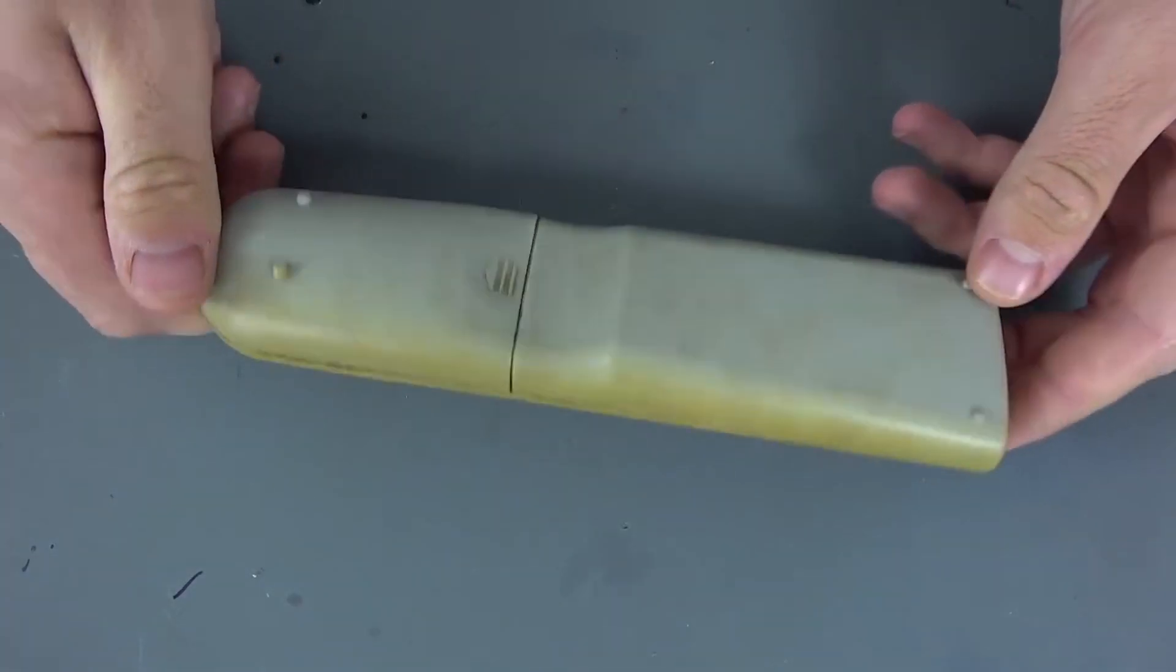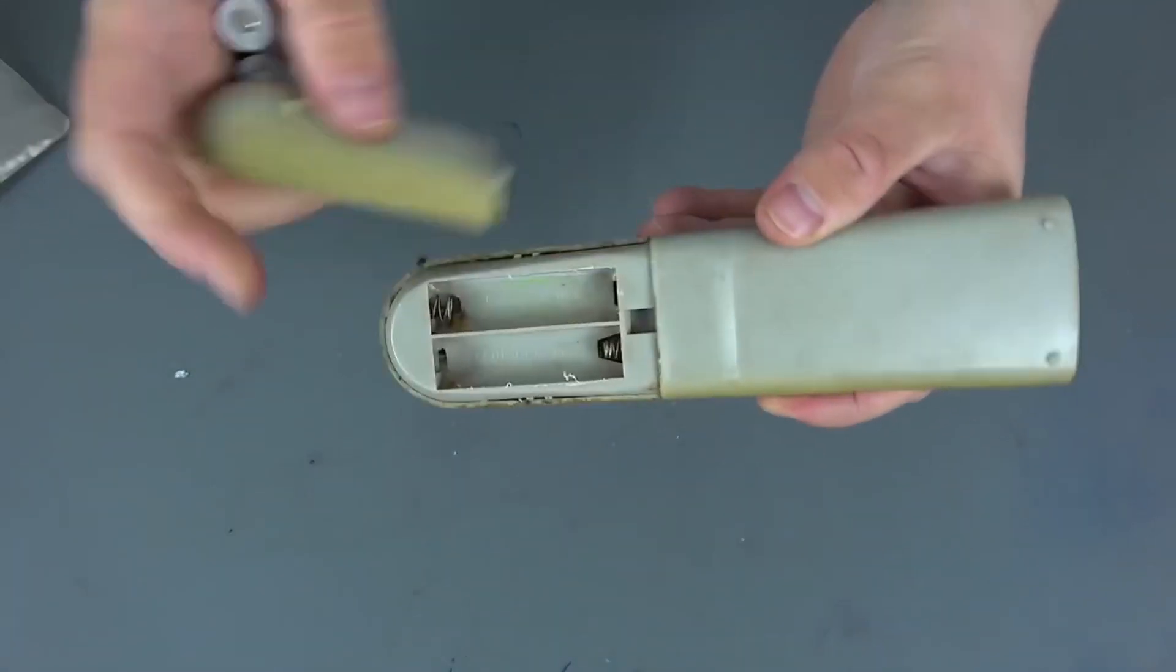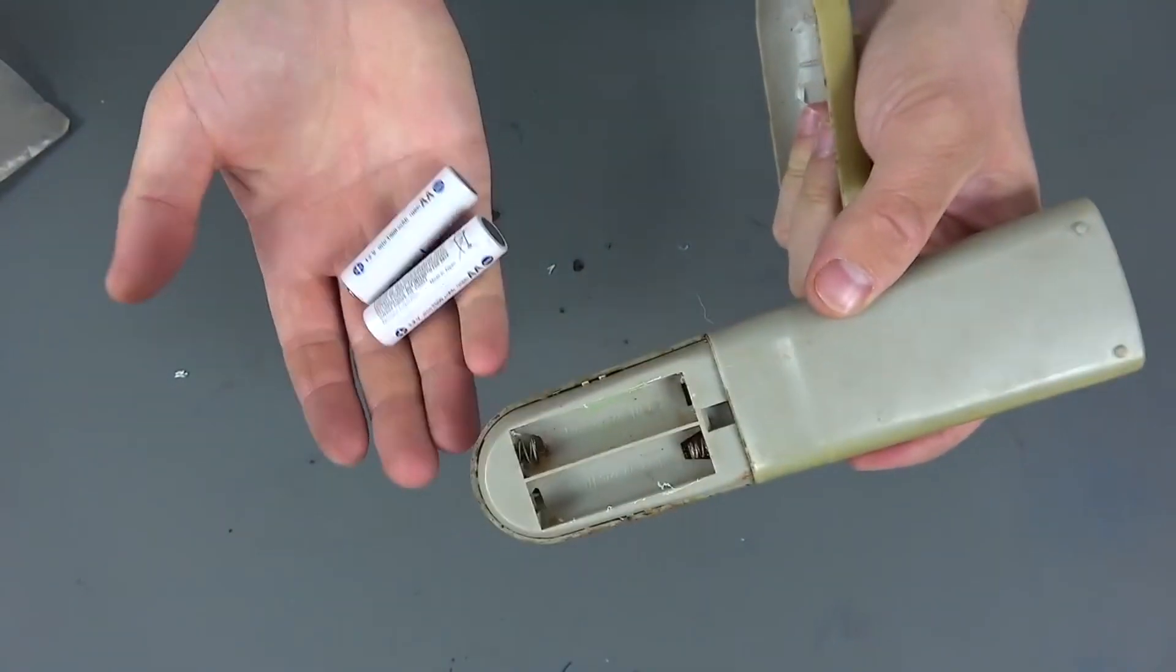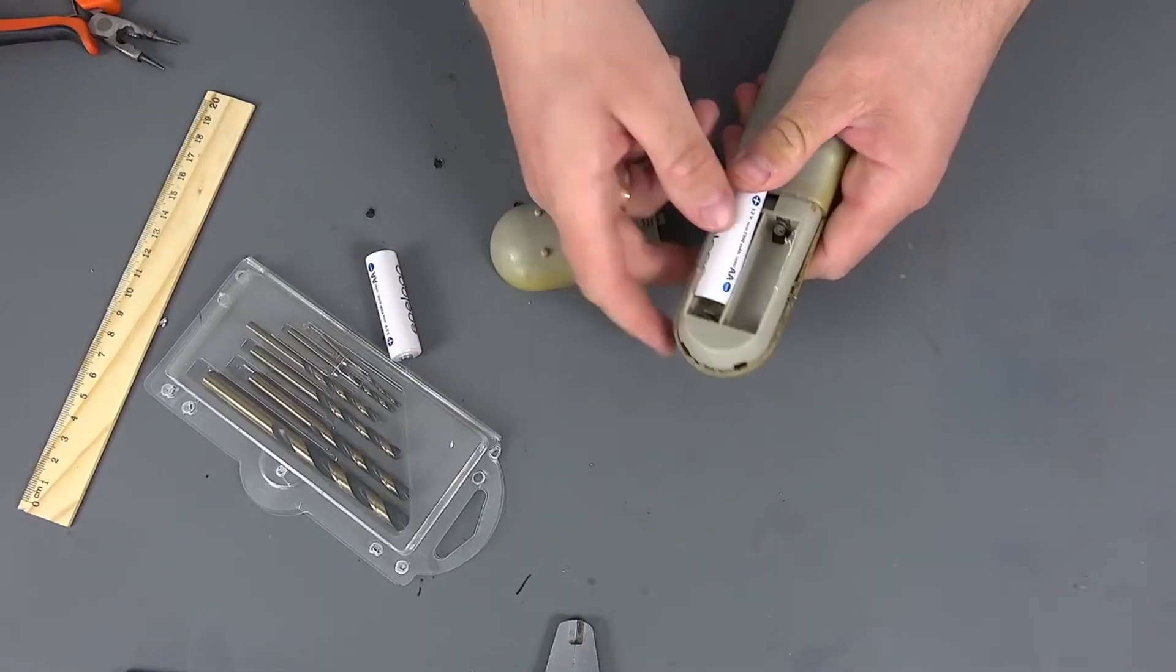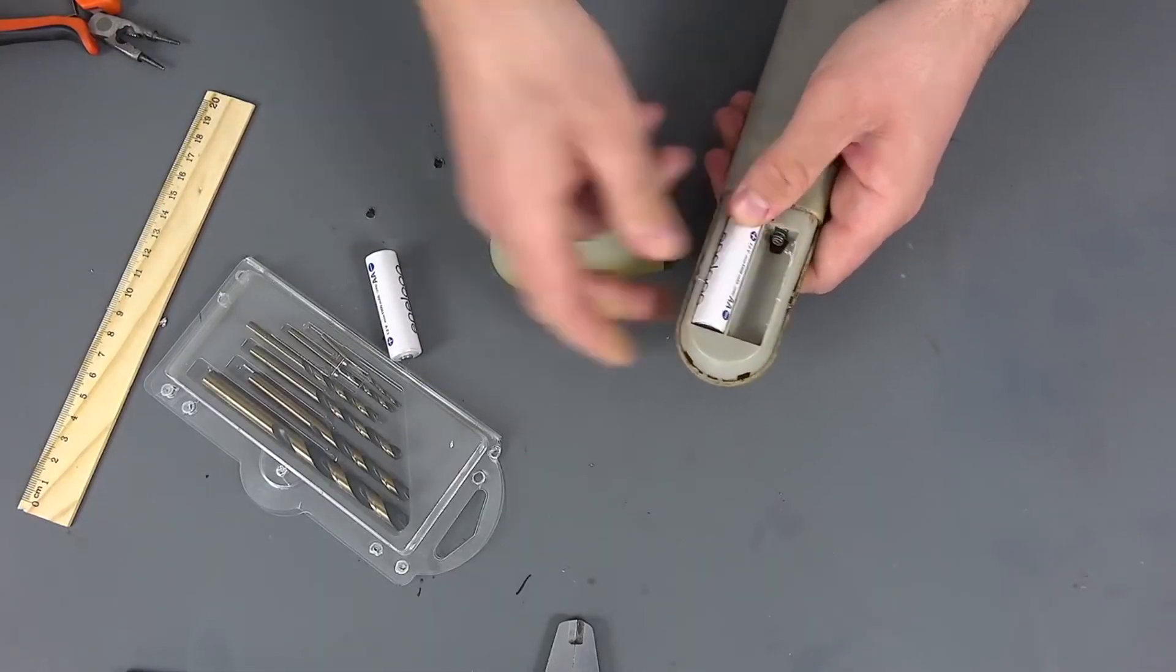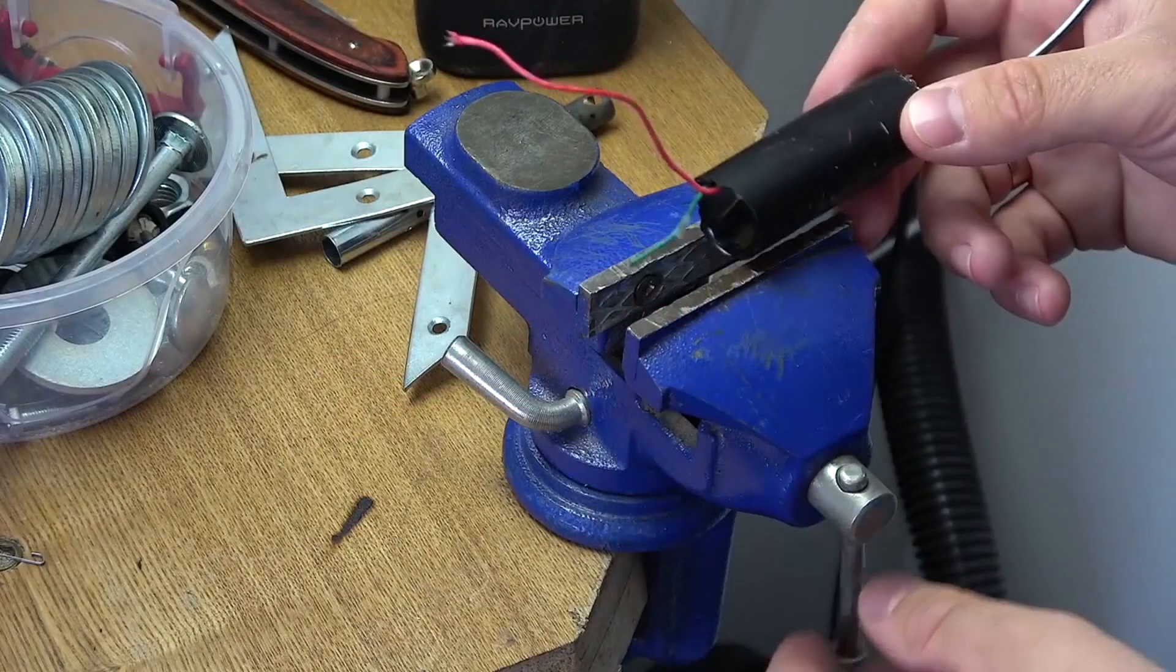In the role of the case, I will use the old remote control from the TV, in which, in fact, there is already a connector for batteries, which greatly simplifies the design. First, we need to change the high-voltage module.